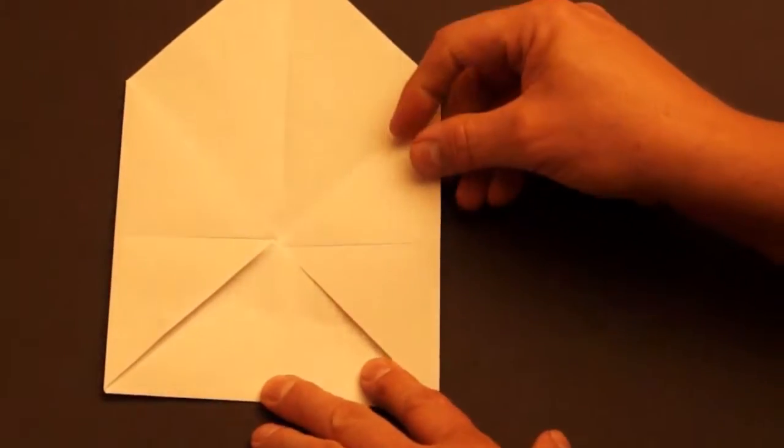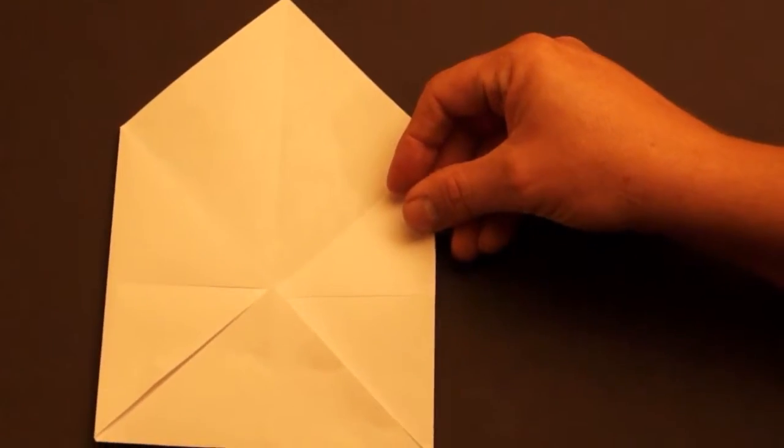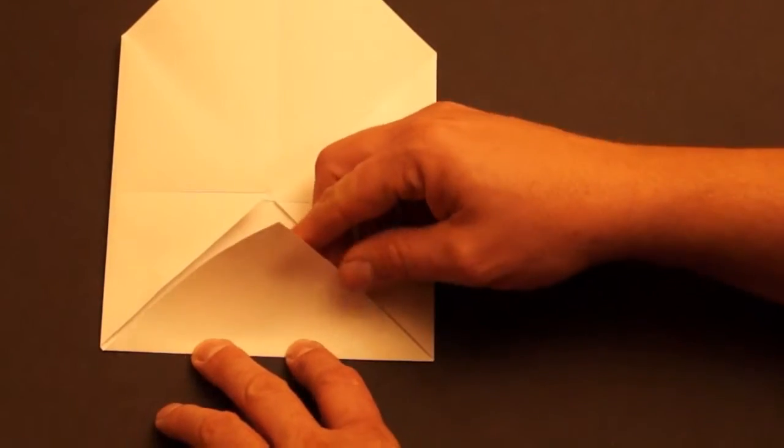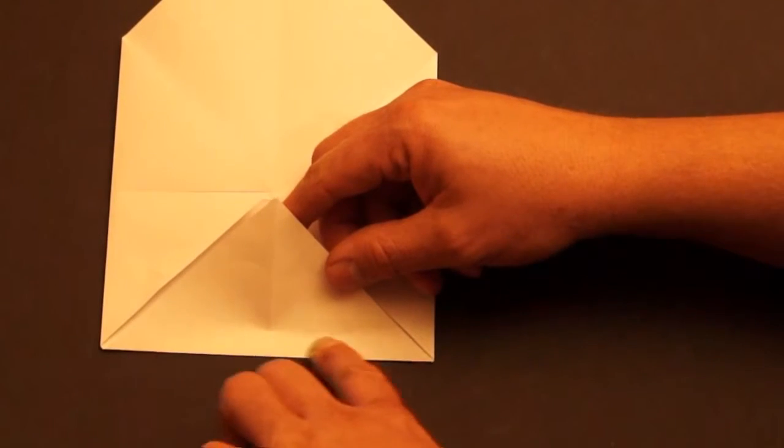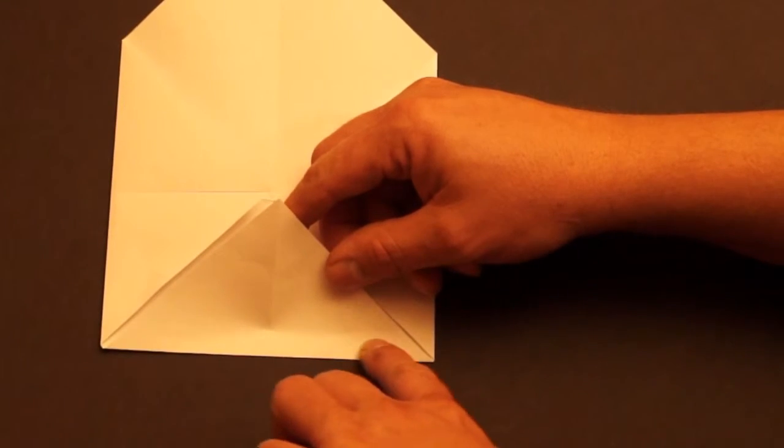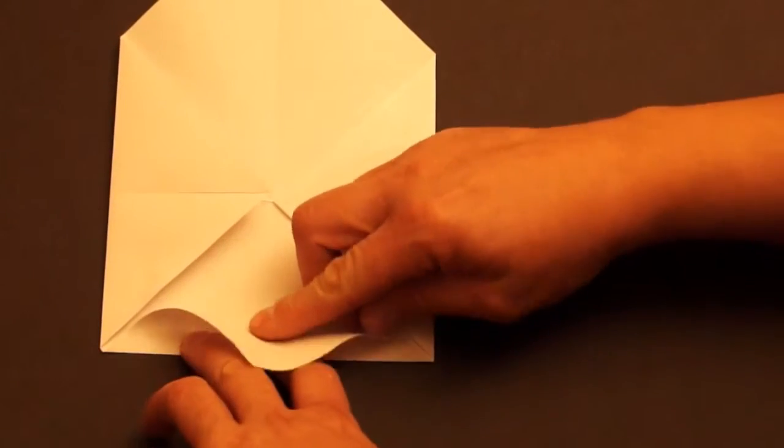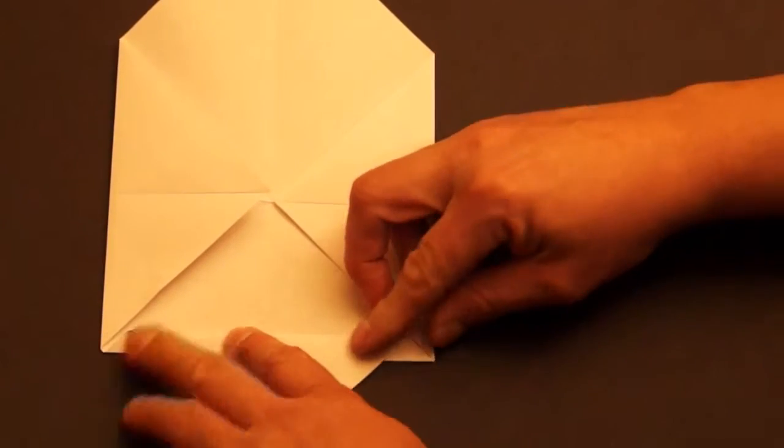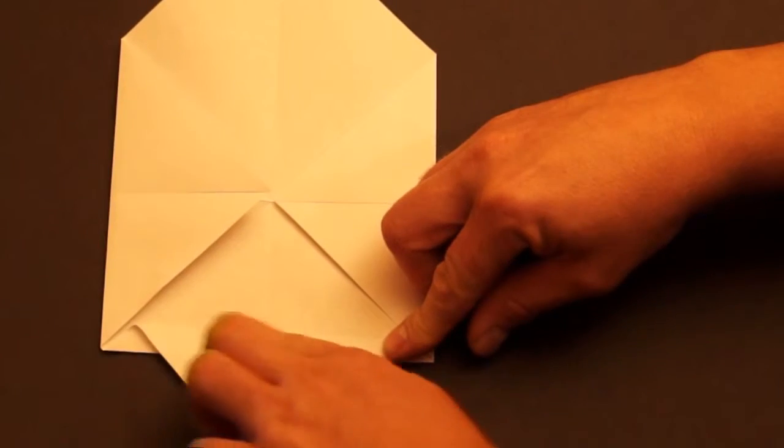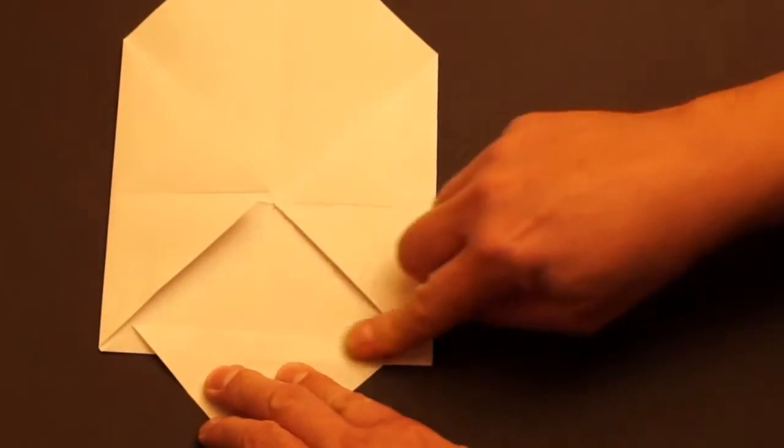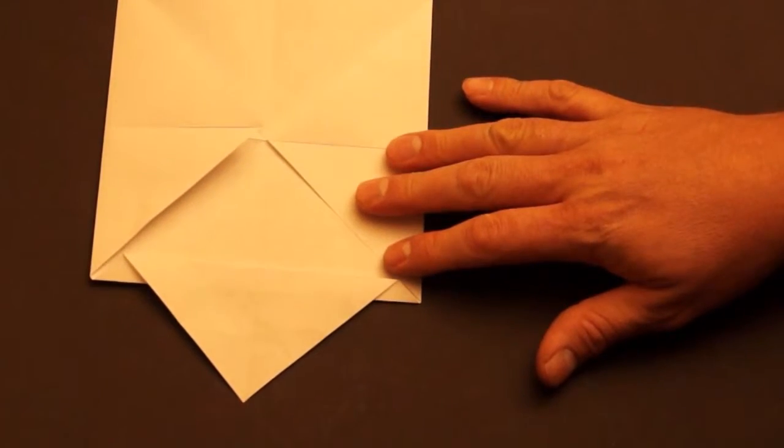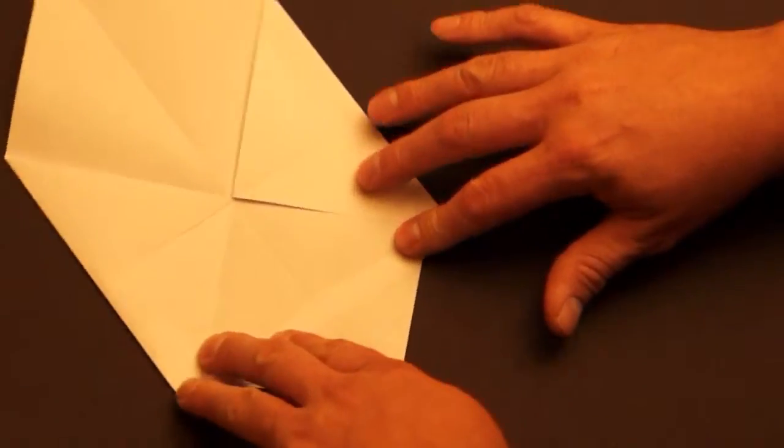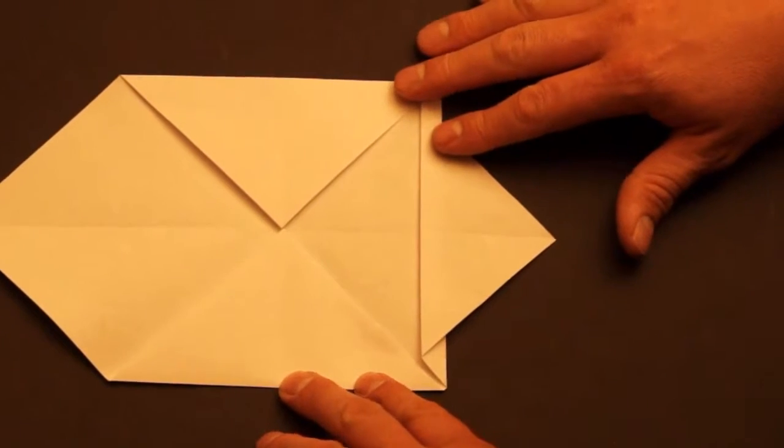Okay, next turn it so that it looks like an envelope and we're going to fold most of the bottom flap down. We're going to leave a little space right across the bottom, fold most of it down straight down. Okay, now turn so it's sideways like this.